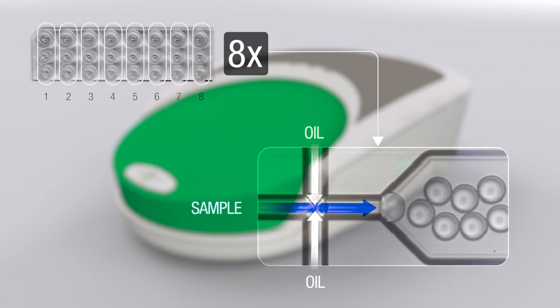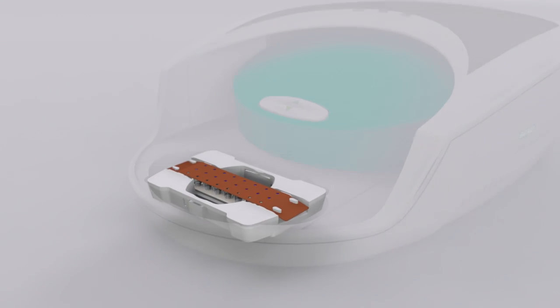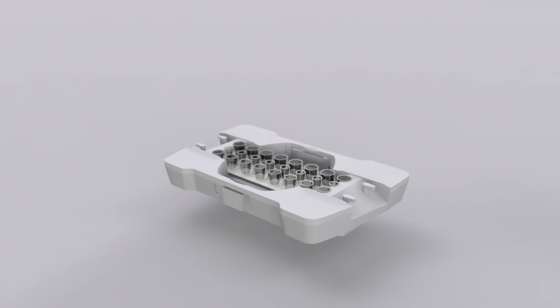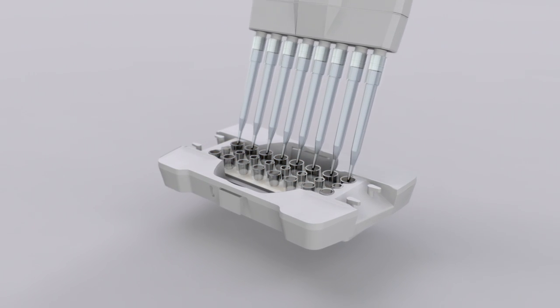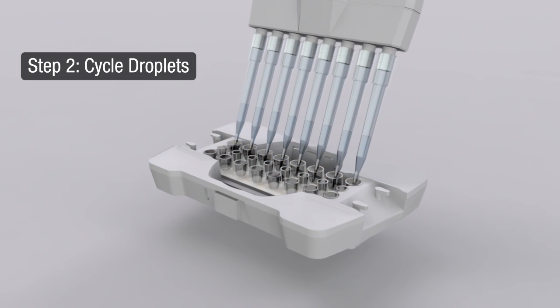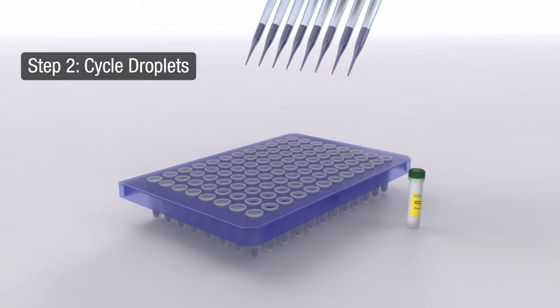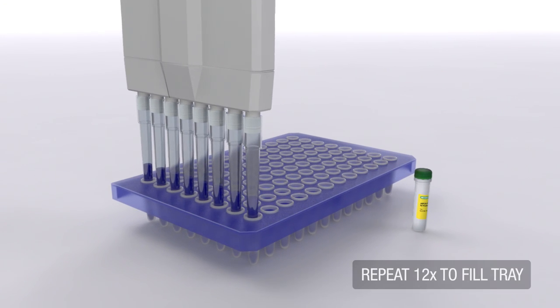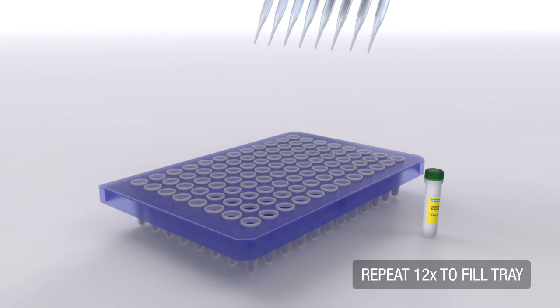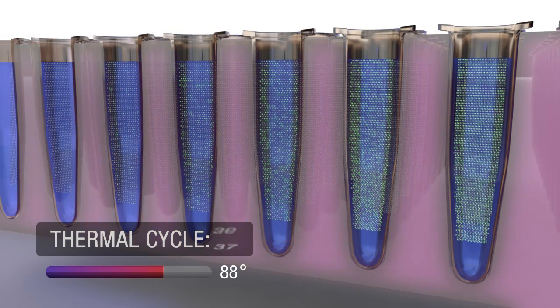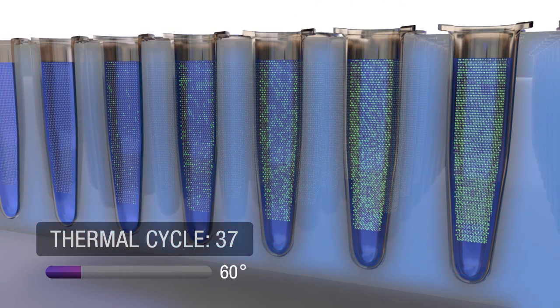Every droplet contains a nanoliter volume of the sample, including any target sequences that may be present. After the droplets are generated, the emulsified samples are transferred to a standard 96-well PCR plate using a standard 8-channel pipette. The plate is then loaded onto a thermal cycler where PCR is performed to amplify the target DNA to end point.